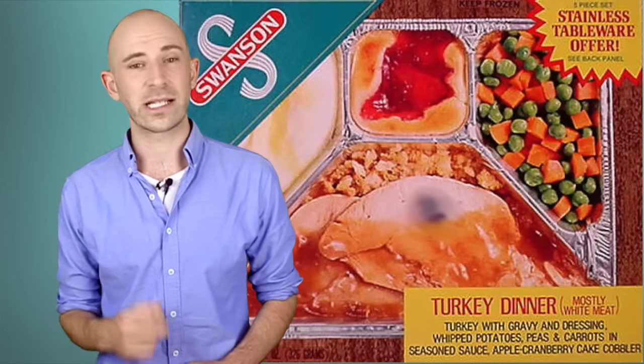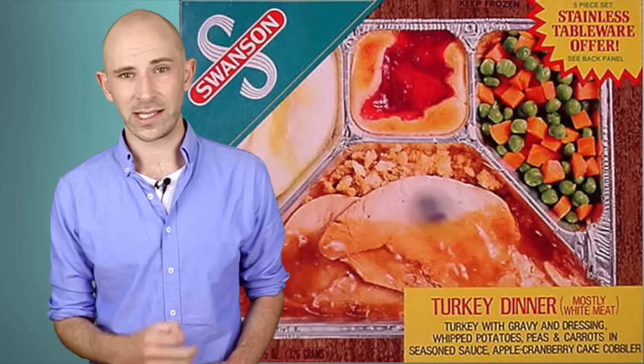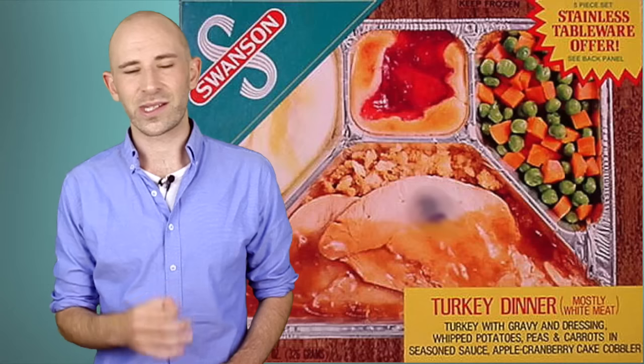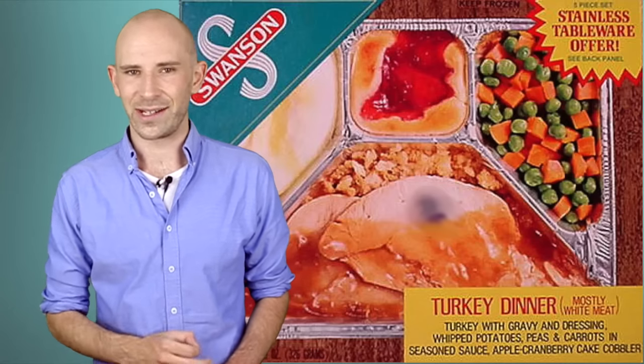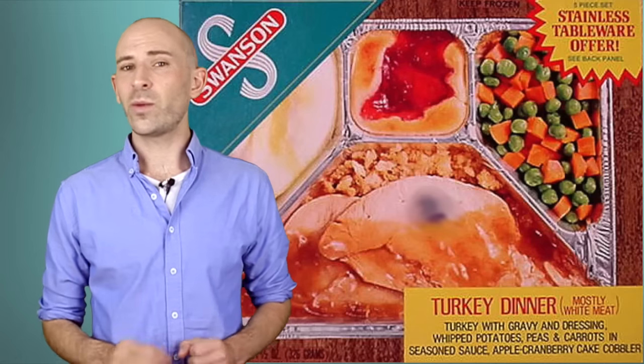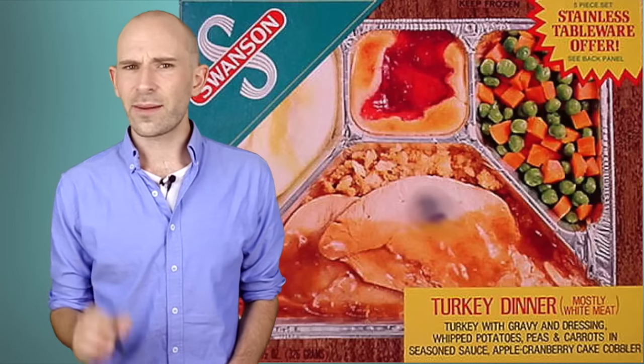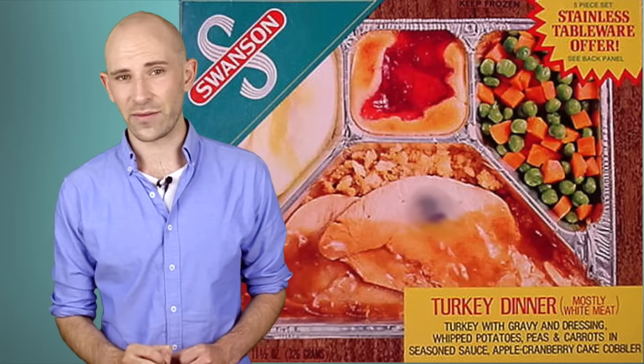Whether that is true or not, the first TV dinner offered by Swanson was a Thanksgiving dinner, containing sweet potatoes, turkey with cornbread dressing, and frozen peas. It sold for 98 cents per dinner, which is about $9 today, and took about 25 minutes to reheat in the oven.